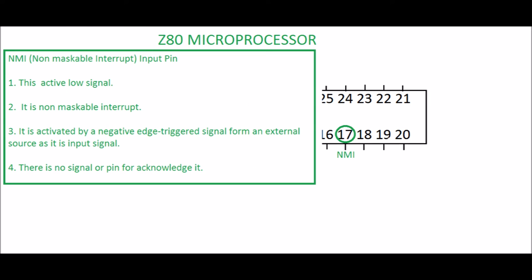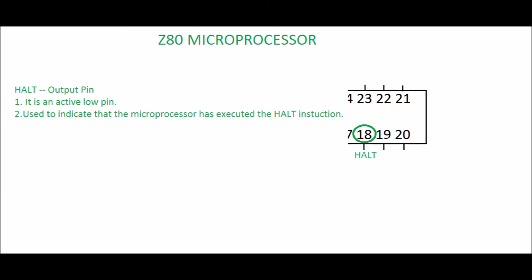Pin 17: NMI, Non-Maskable Interrupt. It is an input pin. This is an active low signal. It is a non-maskable interrupt, meaning it cannot be disabled by software. It is activated by a negative edge triggered signal from an external source. There is no signal or pin for acknowledging it.